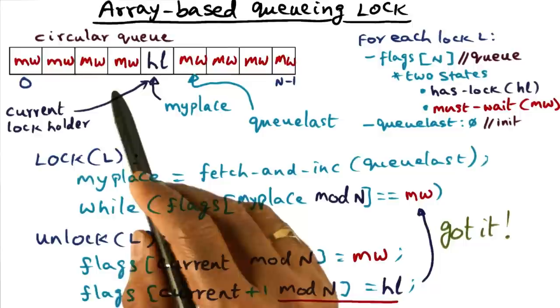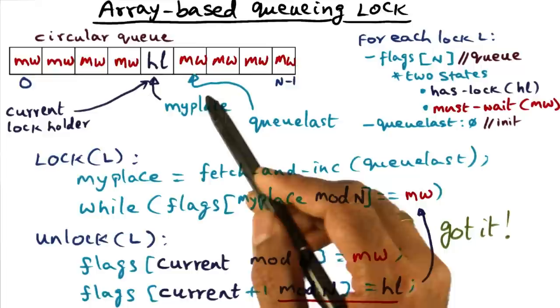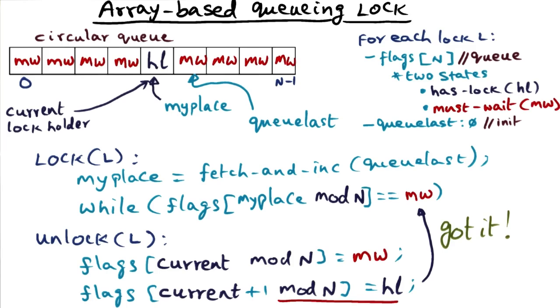And the other thing that you also notice is that the processes are all sequenced. In other words, there is fairness. So whoever comes first gets into the queue ahead of me, and when I come in, if people are going to come after me, they're going to get queued up after me. So that's good news also.